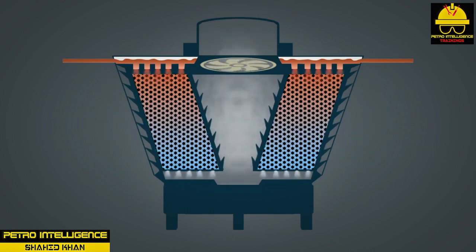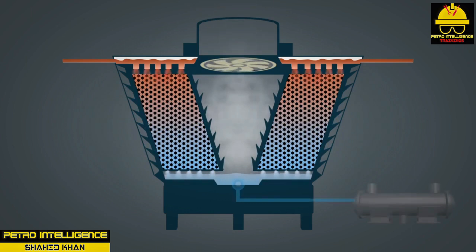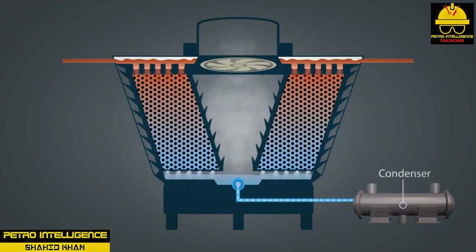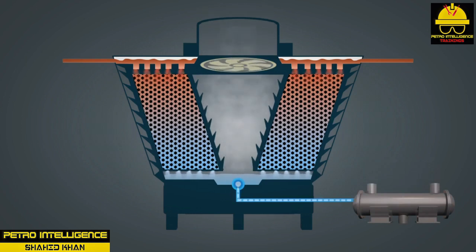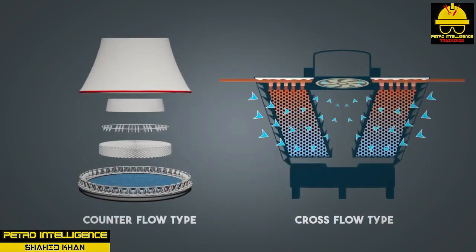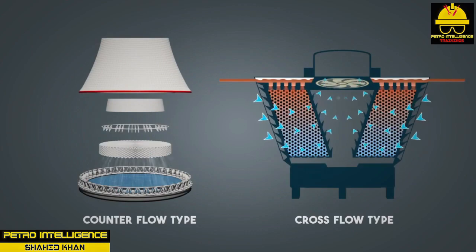The wet bulb temperature, perhaps the single most important factor in cooling tower performance, can be described as: the lowest theoretical temperature to which water can be cooled in the tower; the temperature of the air saturated with water, also referred to as the dew point of air; and a theoretical temperature that cannot be reached, only approached.